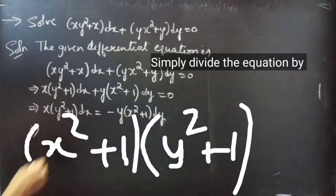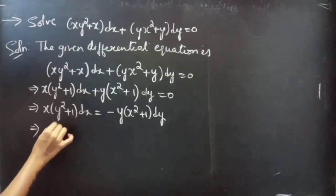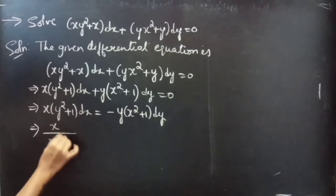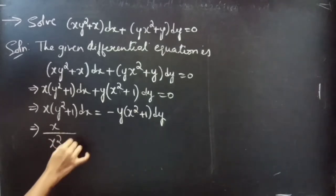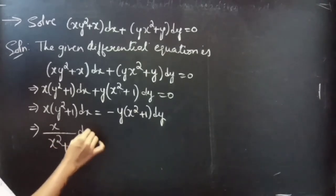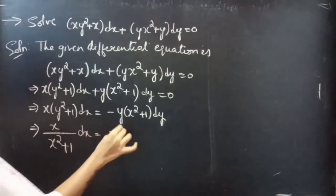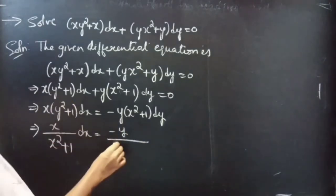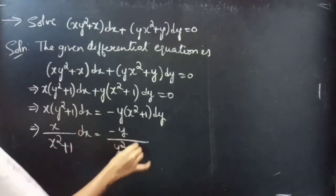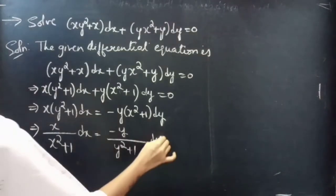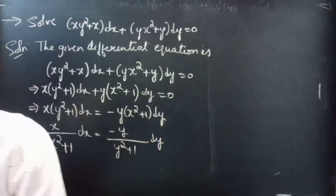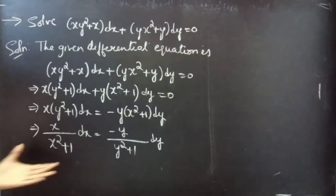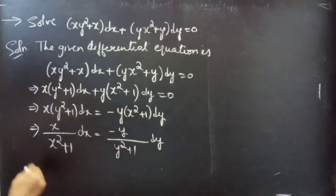So you would write this as x/(x² + 1) dx = −y/(y² + 1) dy. Here the variables are separable.